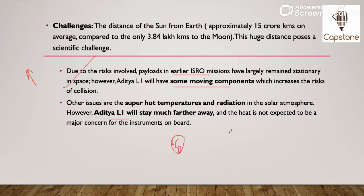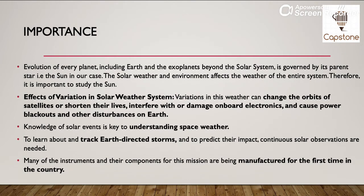Let's say if this is sun, toh Aditya L1 jo hoga — ye Earth hai — aur in donon ke beech mein ek point hai jise bola jata hai Lagrange 1 point. Yahan pe establish kiya jayega Aditya L1 ko. Isliye, bhale ye sun se door hai, but phir bhi bahut saare aise solar atmosphere jo super hot temperature aur radiation hai, woh is mission ke liye ek bada challenge pose karte hain. So ye baat bhi humein dhyan mein rakhni hai.